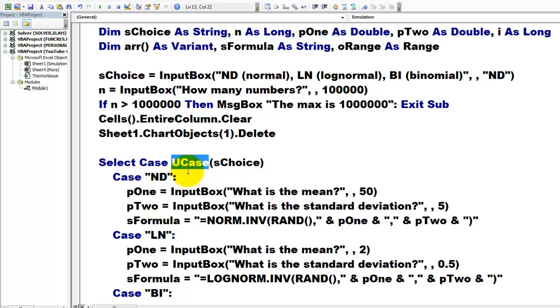If it's ND, then we ask what is the mean, what is the standard deviation, and we put in sFormula, which is a string type variable, the following function: equals NORM.INV. The first argument is the RAND function open close parentheses, then find out what P1 was—that was the mean. Hook onto it a comma for the second argument P2, and we close our function.